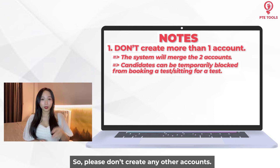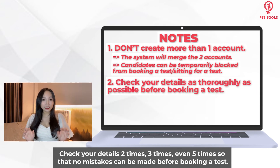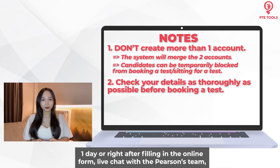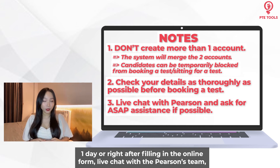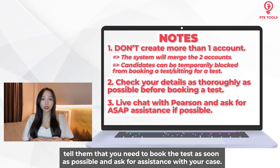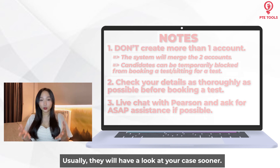Note number two: check your details two times, three times, even five times, so that no mistakes can be made before booking the test. Note number three: one day after, or right after filling in the online form, live chat with the Pearson team. Tell them that you need to book the test as soon as possible and ask for assistance with your case. Usually, they will have a look at your case sooner.